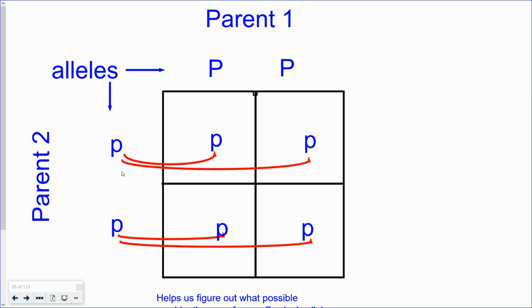And as you can see, just like a multiplication table, imagine if this was the number two and this was the number four, this box would be two times four. So we just simply take the alleles and we move them into the boxes.